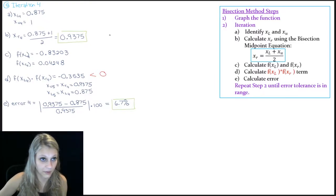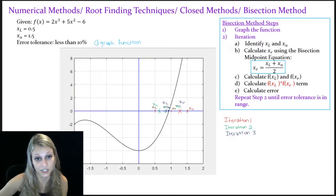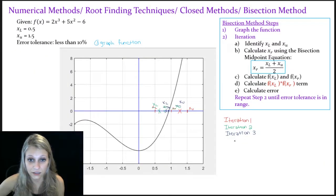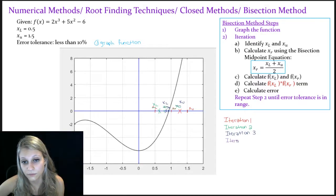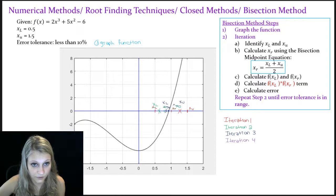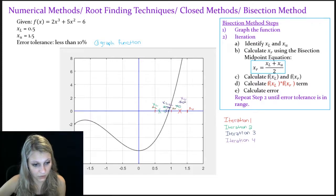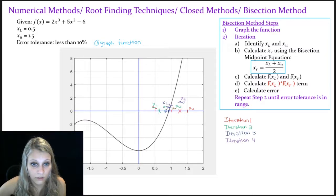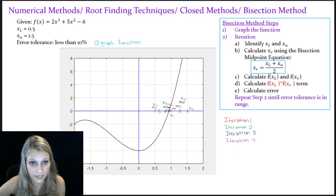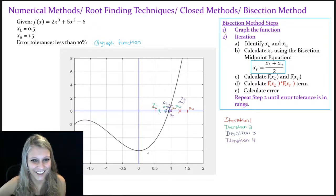So technically we're done. The last thing I want to do is graph our fourth iteration just for consistency. This became our lower bound and this was our upper bound, and we determined that the root estimate was somewhere right in here. Our actual root is in this small lower section, so we got rid of the tiny upper section. And that's it!